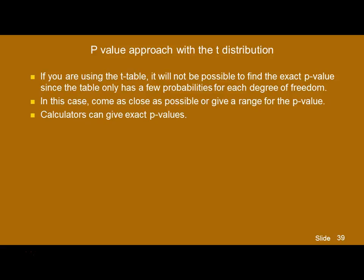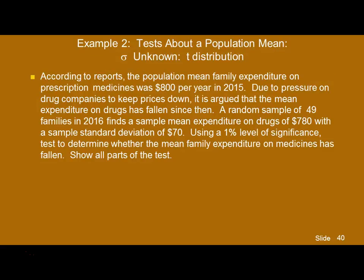If you're using the P-value approach, there's a slight problem in using the T table, because the T tables only give you a few select T values for each degree of freedom — you don't have the entire distribution. Therefore, when you're trying to find a P-value, it's unlikely that you're going to be able to get the exact value out of a table. You can either come as close as possible or give a range for the P-value. One of the advantages of calculators is that they can calculate the exact P-value for you.